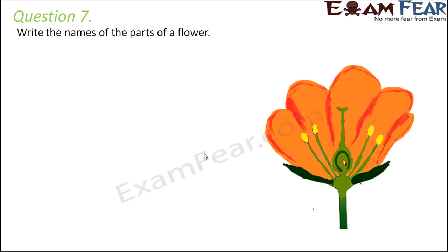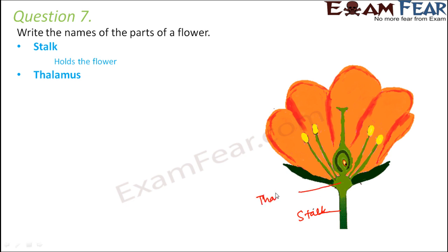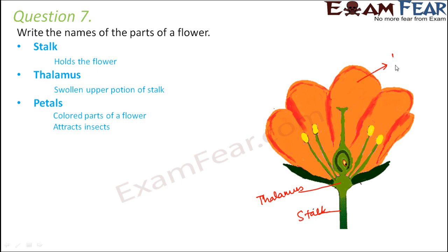Question number 7: write the names of the parts of a flower. When you look at a flower, the important parts are: the stalk, which holds the flower; the thalamus, which is the swollen upper portion of the stalk; petals, the colored structures that attract insects; and sepals, the green structures on the outer side of the petals that provide protection to the bud.